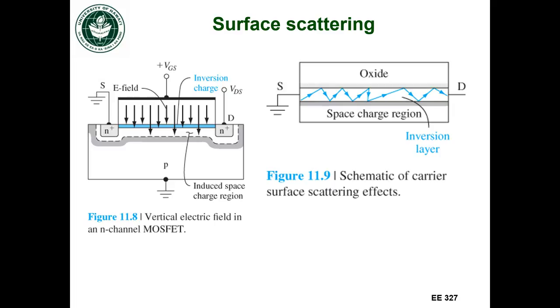So up to now when we've considered the carrier mobility mu, we've assumed it's a constant, but it's actually not a constant. And one of the factors that make the carrier mobility change is going to be this surface scattering effect. So let me explain what I mean by surface scattering.